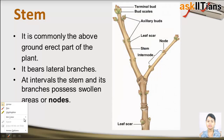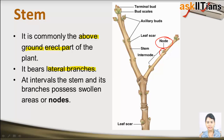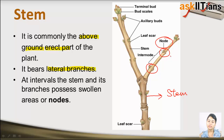The next organ is stem. Stem is above the ground and it is erect. It bears lateral branches. At intervals, there is the presence of nodes. Nodes are present at certain intervals along a plant stem. In between two nodes, the distance is known as the internode.